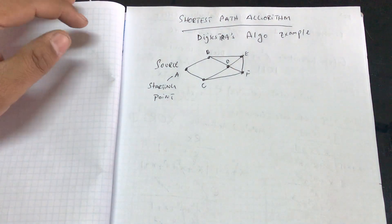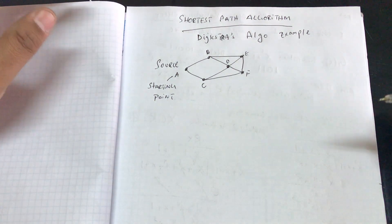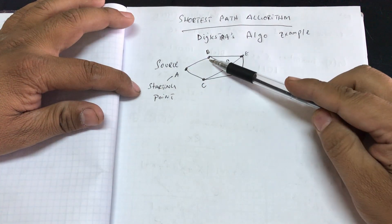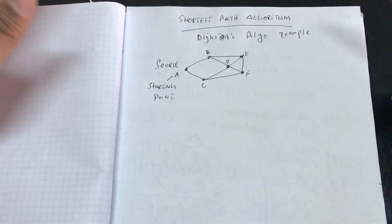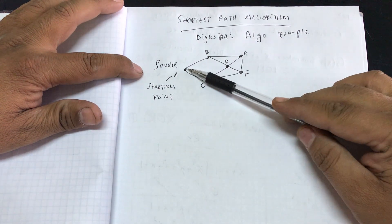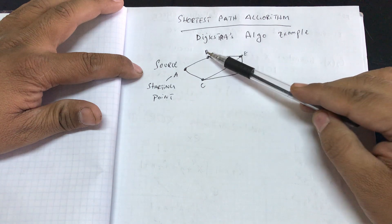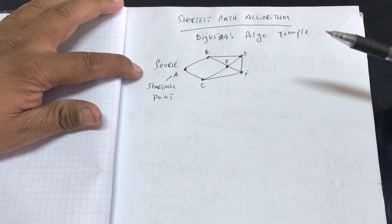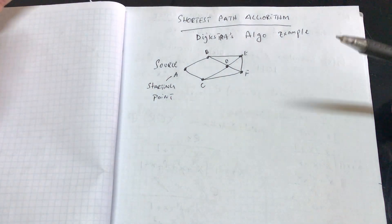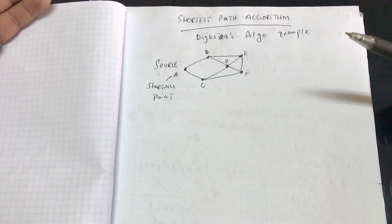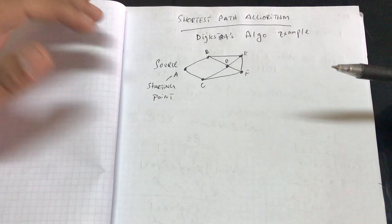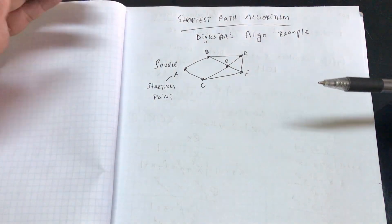The idea of Dijkstra's algorithm came from something called graph theory. In graph theory, every node or entity is known as a vertex, and the connections coming out from these vertices are known as edges. These edges are defined based on their weight.